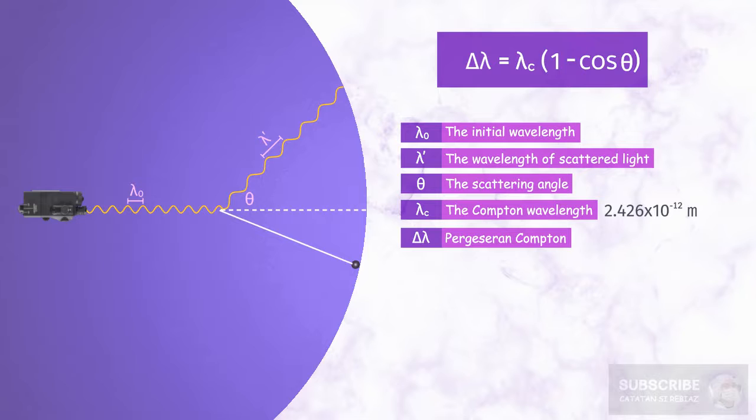So the Compton effect is one of the phenomena that light, which is an electromagnetic wave, can behave like a particle.